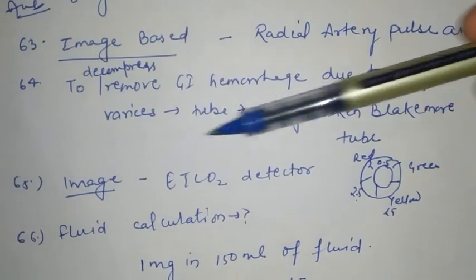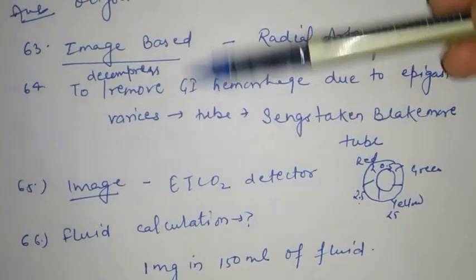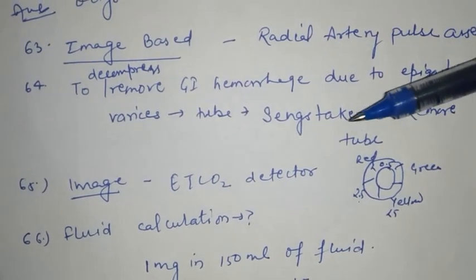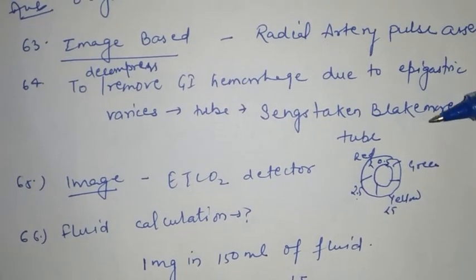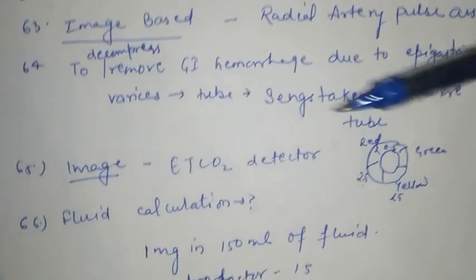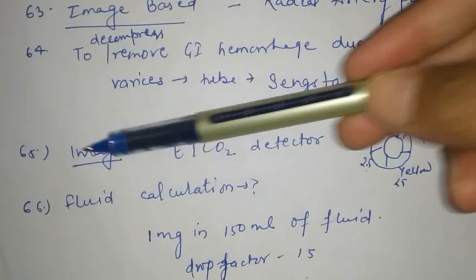There was one image-based question where the person was checking the radial artery — radial artery pulse assessment.